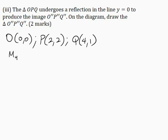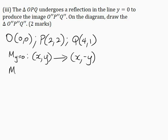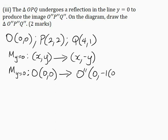For the reflection in the line y = 0, for any object with coordinates (X, Y), it has an image of (X, −Y), since the X coordinate remains the same and the Y coordinate is multiplied by −1. So for point O with coordinates (0, 0), its image O' is (0, −1×0) = (0, 0).